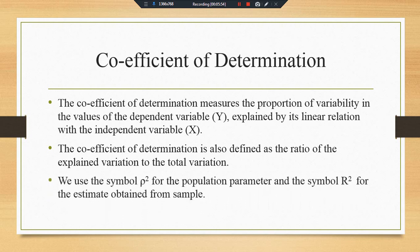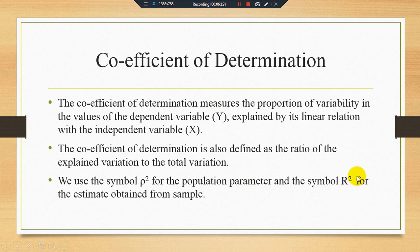We use the sample r-square notation for the sample case, and we denote rho-square for the population parameter. When finding the coefficient of determination for the population parameter, we use rho-square. When finding it for the sample case, we use r-square. So r-square is for the sample case and rho-square is for the population case.